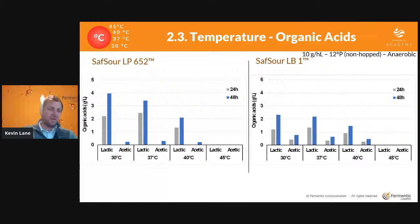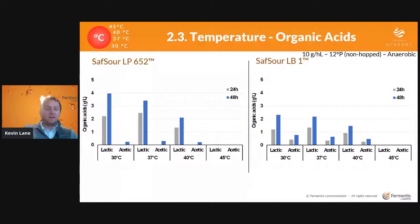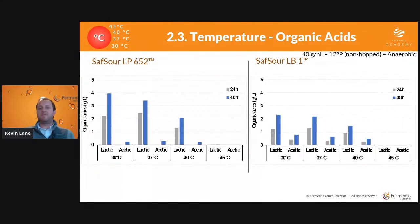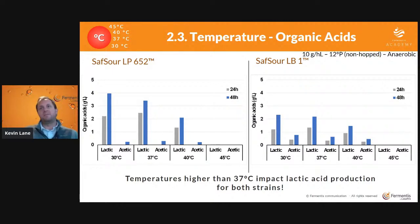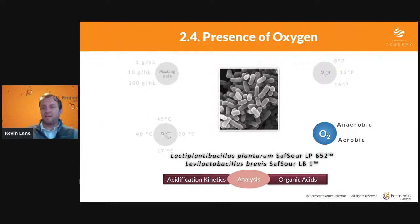Maybe you're not looking for as sour a beer, so you choose a slightly warmer lactic fermentation temperature. Or maybe you're looking to get as acidic as possible and hone in on that peak acid production temperature, which is probably right around 30°C. We noticed that with both bacteria, temperatures higher than 37°C really impact lactic acid production. If your target allows, try to stay within that comfort zone of 30 to 37°C, and the bacteria will be quite happy and produce quite a bit of acid.